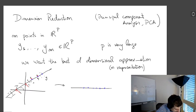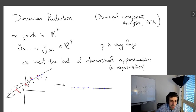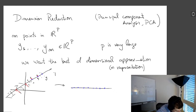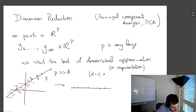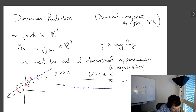From two dimensions to one dimension you're not really gaining much visualization, but if P is much, much bigger than D — think of D equals 2 or 3 — you start being able to visualize. This allows for visualization, and I'll show some examples.